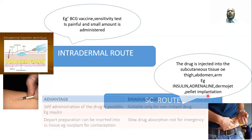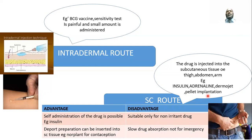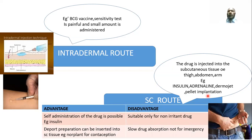The advantages of subcutaneous administration include: it is self-administered, possible especially for insulin. Depot preparation is possible because subcutaneous absorption is very slow, allowing sustained release of the drug — important for norplant contraception.